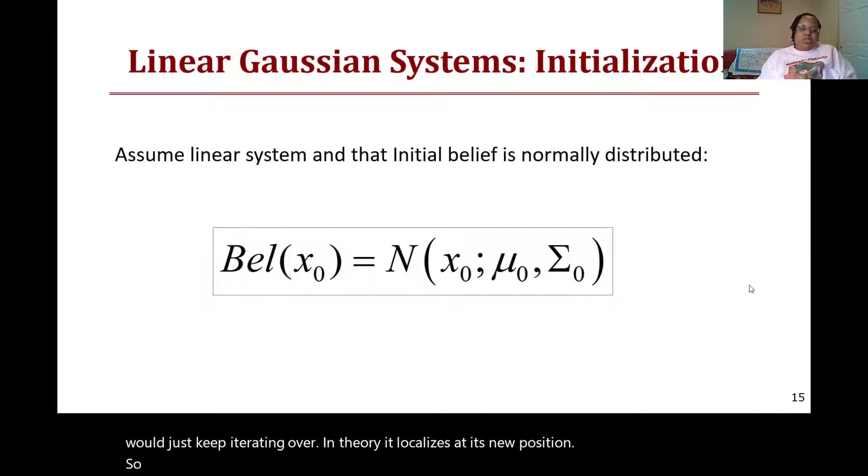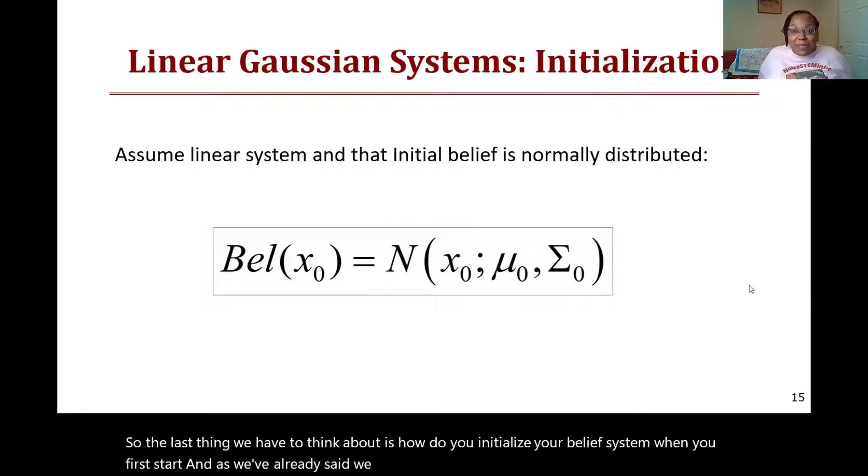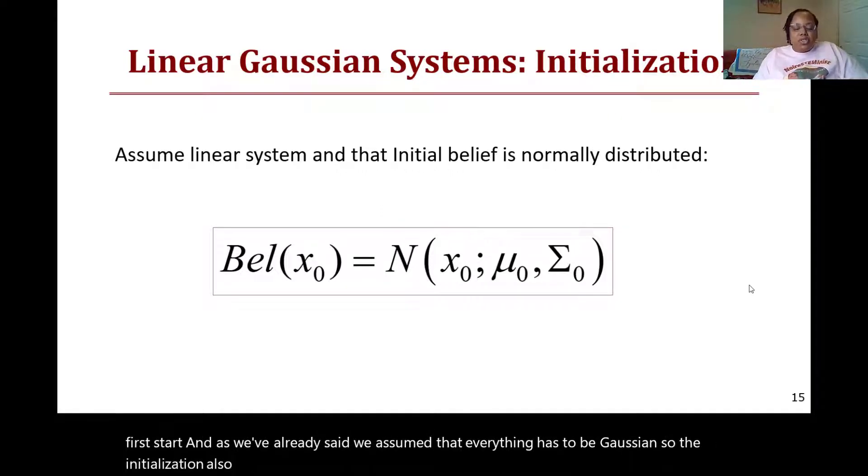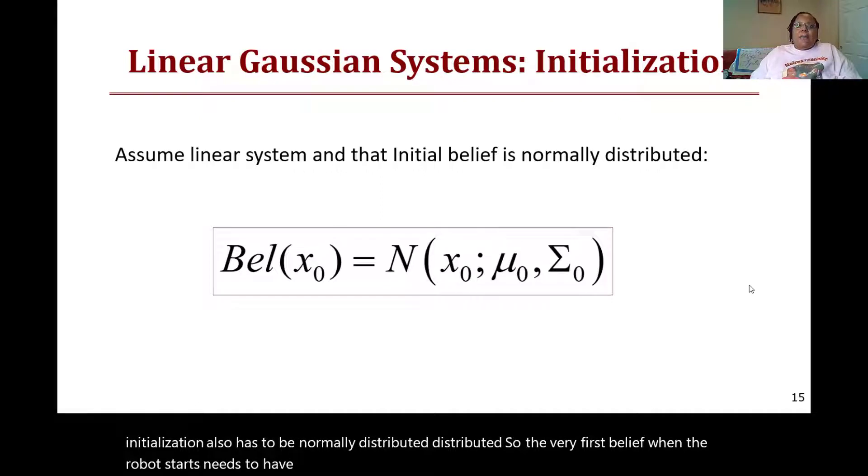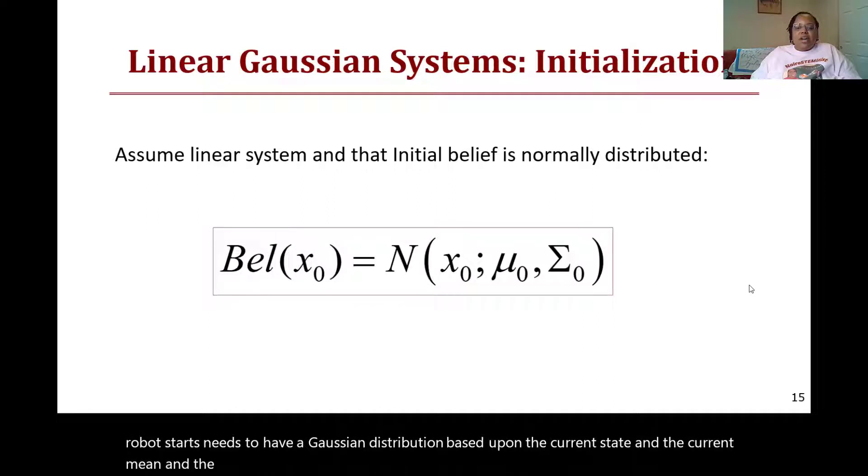The last thing we have to think about is how do you initialize your belief system when you first start. As we've already said, we assume that everything has to be Gaussian, so the initialization also has to be normally distributed. The very first belief when the robot starts needs to have a Gaussian distribution based upon the current state and the current mean and the current standard deviation, which we call x_0, μ_0, and Σ_0.